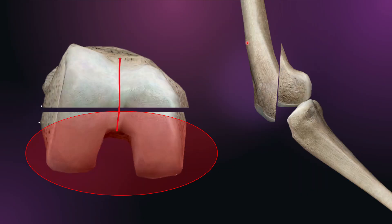We frequently see distal femur fractures with multiple fragments — anterior fragments, which can be split into lateral and medial, and then posterior fragments, the Hoffa fragments, which are also split into medial and lateral. So more or less, we have four fragments: anteromedial, anterolateral, posterolateral, and posteromedial. Often because of the forces around the knee joint, the Hoffa fragment tends to get displaced proximally due to push from the tibia and pull of the gastrocnemius muscle, which inserts posteriorly. If you give traction, this fragment will angulate more and hinder your reduction. So traction is not helpful in such cases.